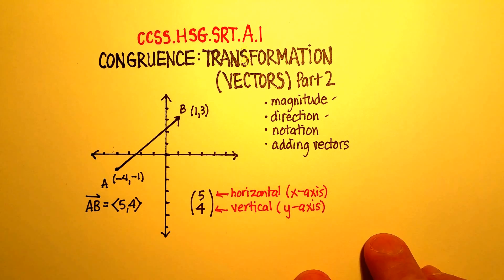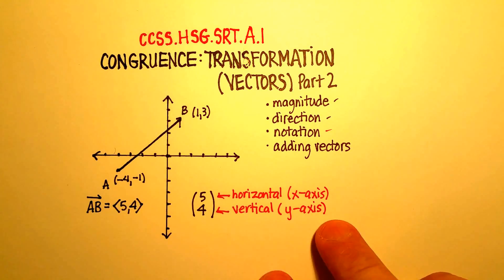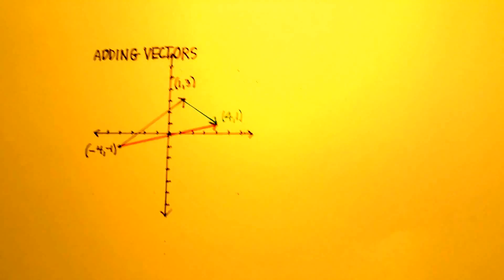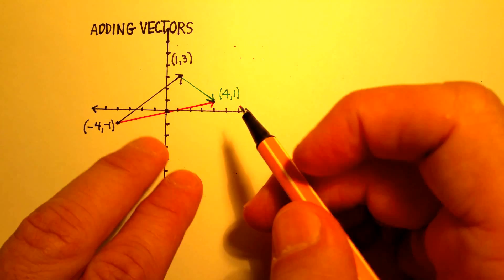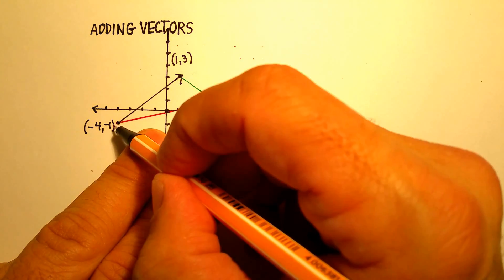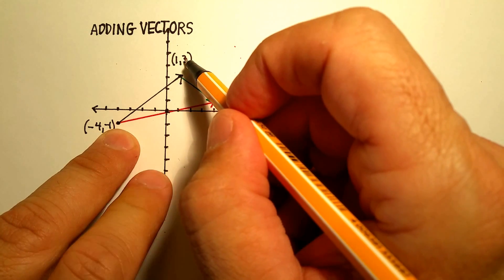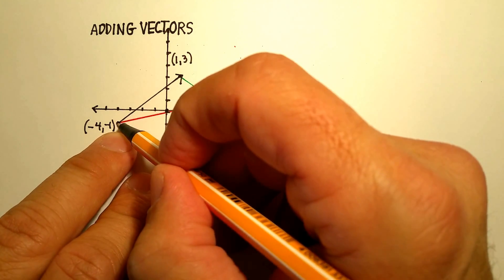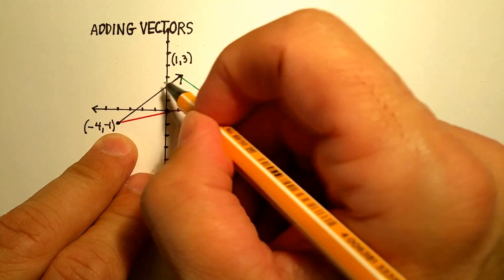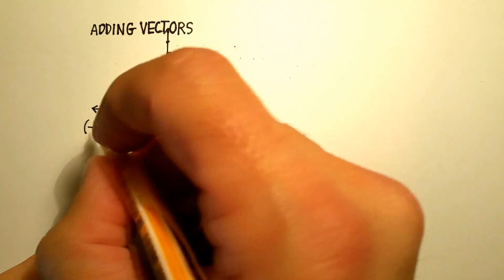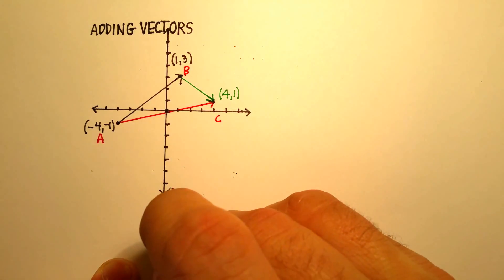Now, let's go to another part, and that is finally adding vectors. Now, you'll see what I've done here. I've got a vector from negative 4, negative 1 to positive 1, positive 3. So here's the initial point, terminal point. How would we describe this particular vector? You could say, and again, let's just go ahead and label these. We'll say A, B, and C.